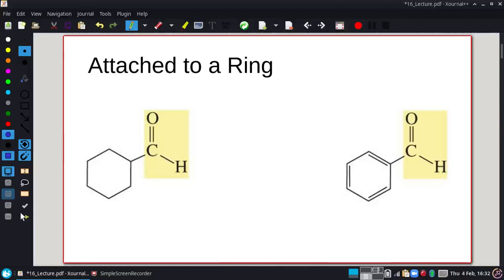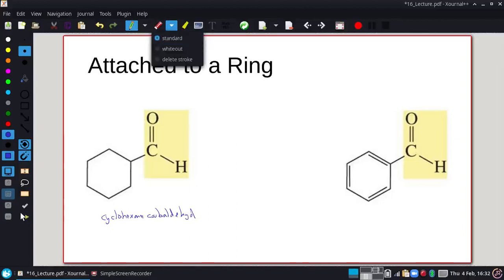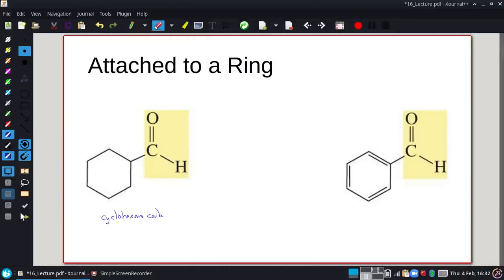All right. When they're attached to the ring, we have a similar thing to what we did before. So cyclohexane, carbaldehyde, no, carboxaldehyde. I'm dropping letters. And that is the only name we use over on the cyclohexane. And this one could be benzene, carbaldehyde. But far more often, you end up seeing benzaldehyde.